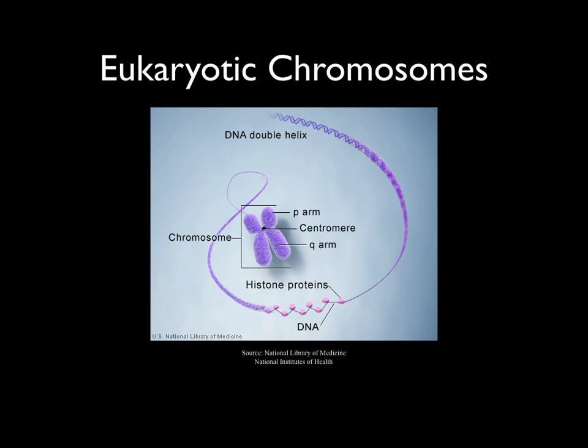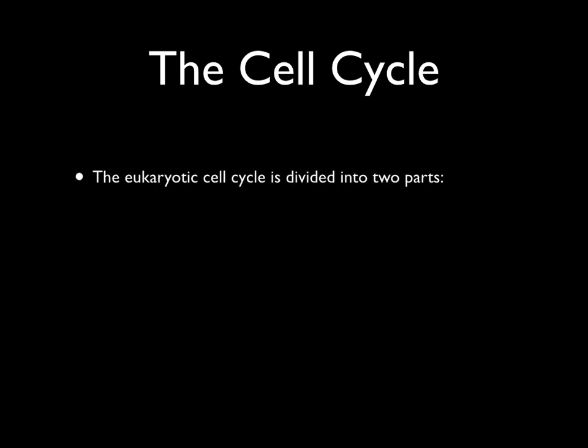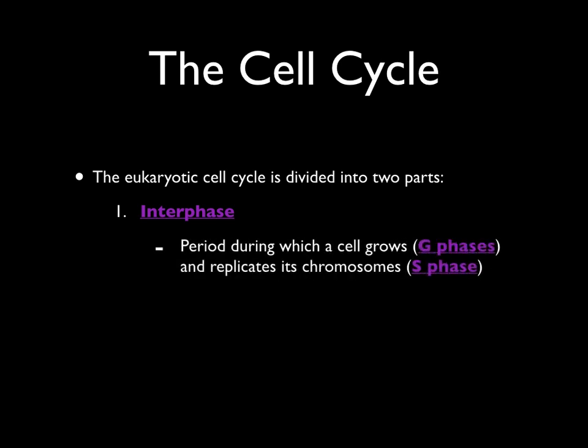Let's move on now and talk in more detail about the eukaryotic cell cycle. The eukaryotic cell cycle is divided into two main parts. The first is called interphase. Interphase is extremely important because it's during interphase that a cell grows and replicates its chromosomes. Because interphase is so important, most of a cell's lifetime is spent in interphase.